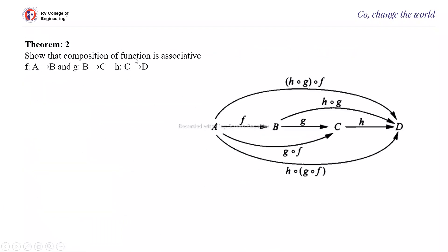Theorem 2: Show that the composition of functions is associative but not commutative. F is a function from A to B, G is a function from B to C, and H is a function from C to D. Then Gof is a function from A to C, H composition Gof is a function from A to D, and H composition G, composition F is also a function from A to D.